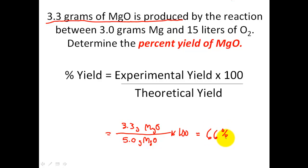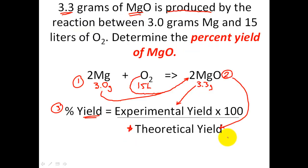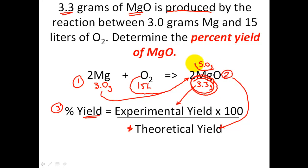Going back to the original problem: I produced 3.3 grams of MgO in lab, but I should have produced 5 grams of MgO. The percent yield — what I made in lab divided by what I should have made based on the stoichiometry problem — turns out to be 66%. That finishes up our percent yield problem. Hope it helps. Have a good day.